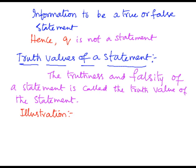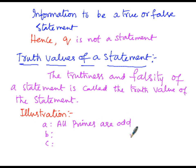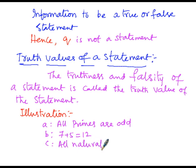Let us consider A, B, and C as three statements. The first statement A is: 'All primes are odd numbers.' The second statement B is: '7 plus 5 equals 12.' The third statement C is: 'All natural numbers are positive numbers,' where the plus sign indicates positive.